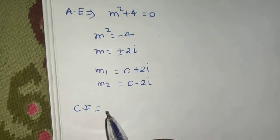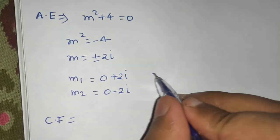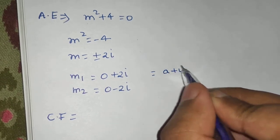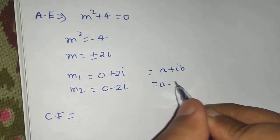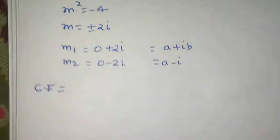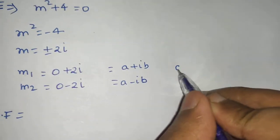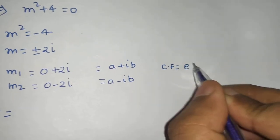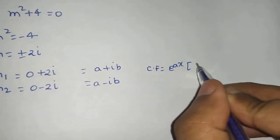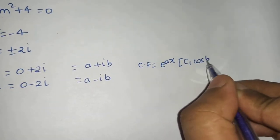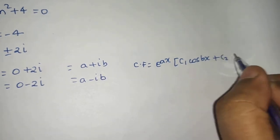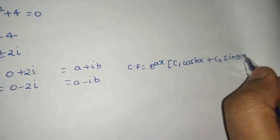So these are complex roots and conjugate of each other. So in this case we find complementary function by - this is nothing but of the form a plus iota b and a minus iota b. Then we find our complementary function as e power ax times c1 cos bx plus c2 sin bx. This is a simple rule.